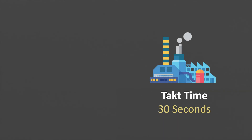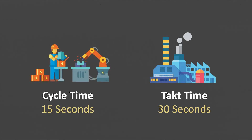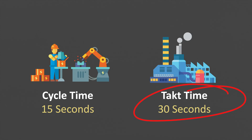If we compare the takt time of 30 seconds with the cycle time of 15 seconds, it is pretty clear that both numbers are completely different and based on different figures. It is very important that you do not mix up the cycle time, mostly visible on the shop floor, with the takt time, which is driven by the customer demand.